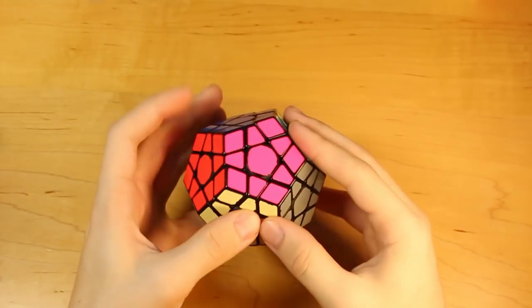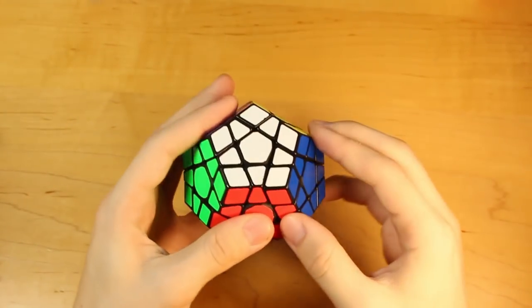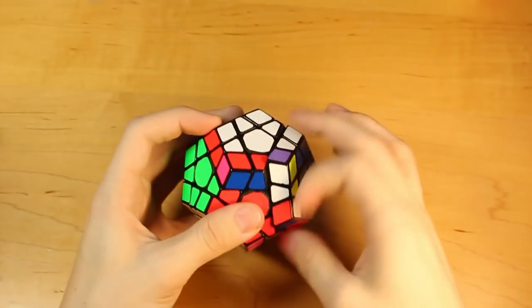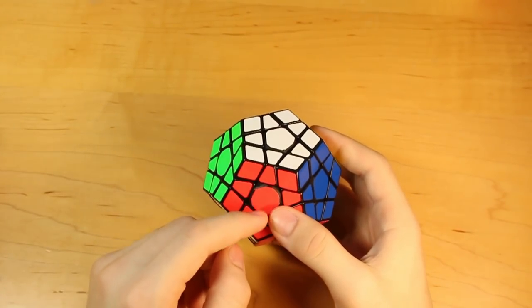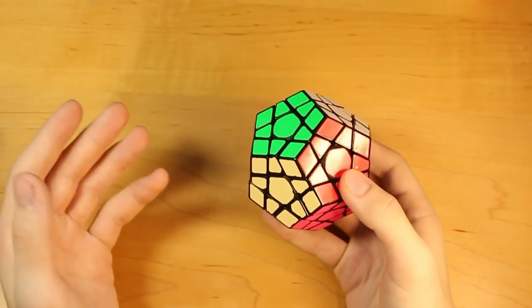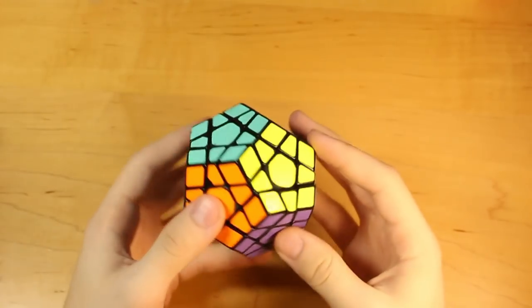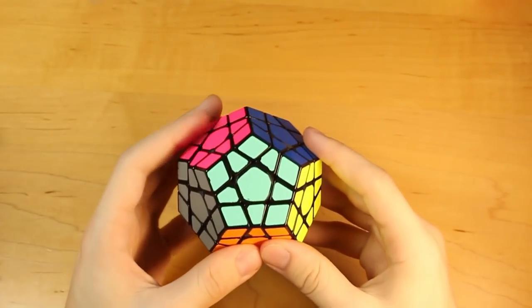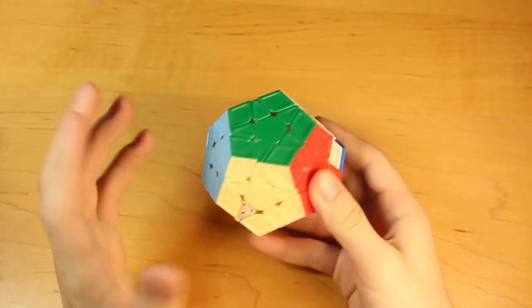Then I got this Shengshou Megaminx. And also did an entire Florian mod to it. I was kind of dumb for doing that. Because the day I finished modding this cube, the X-Man Galaxy was just announced coming out. And I was like, are you serious? Why did I do that? But yeah, it's a really pretty cube. I think the Florian holes make it look a little cooler. This is my first Galaxy. This is the V1. It is bigger than the Galaxy V2.